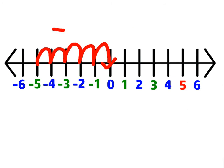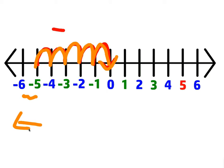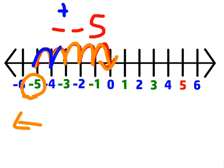Let's look at another one. If I start at the number negative 5, what number must I subtract to end up at 0? It's not 5 — if you subtract 5, you'd go to negative 10. You started with negative 5, so you're going to be subtracting negative 5. Remember, two negatives make a positive, so it's the same as adding 5, and that's why we're moving to the right.